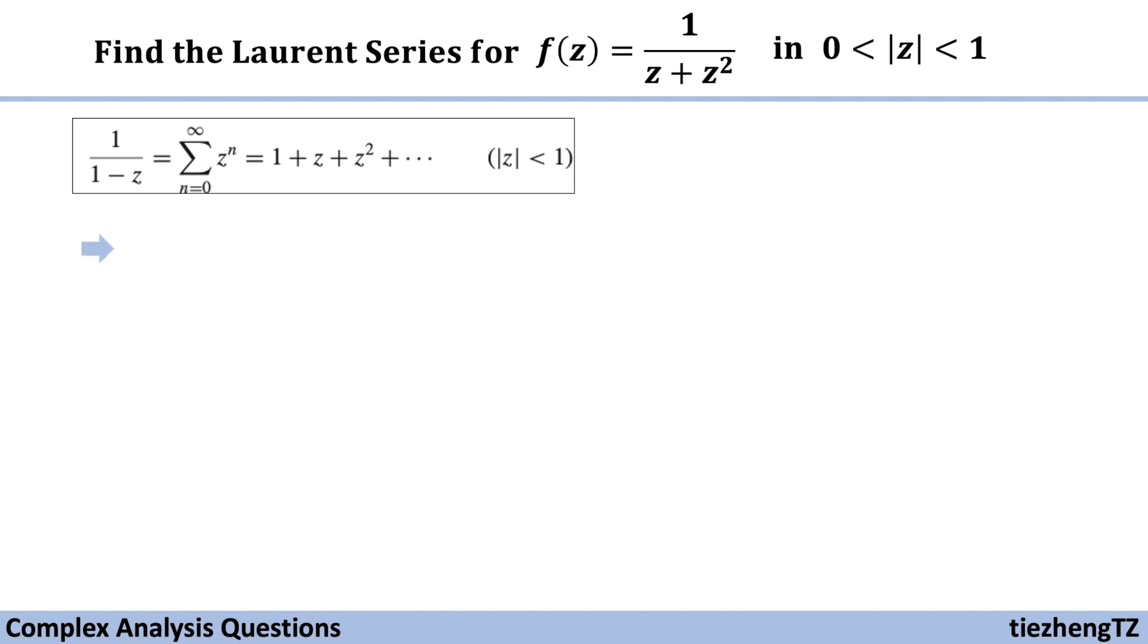First we need to change the form of this given function to 1 over z times 1 over 1 plus z. Since the given format is 1 minus z in the denominator part, we need to change 1 plus z into 1 minus format. Since the absolute value of z is less than 1, which is same as in the given format, we don't need to do anything here.